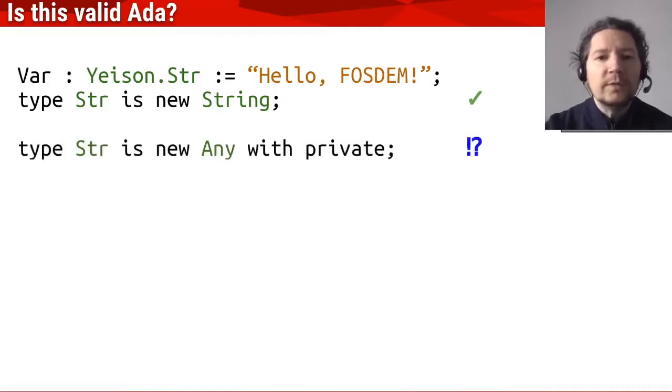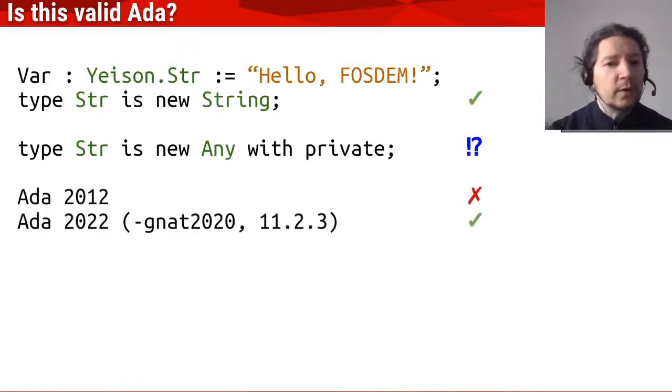But what if I ask you if this can be done for a regular private type? And here, depending on your knowledge of Ada 2022, you will tell me, no, this is not valid data, because it wasn't.